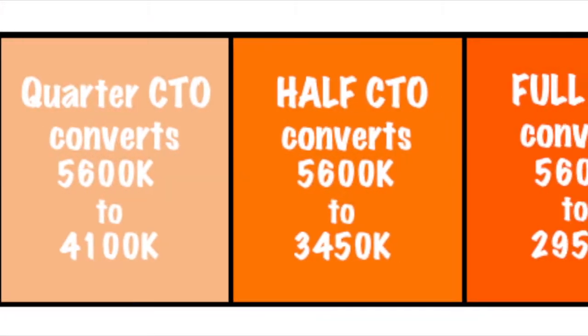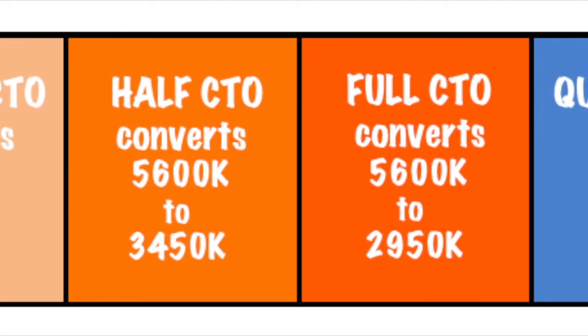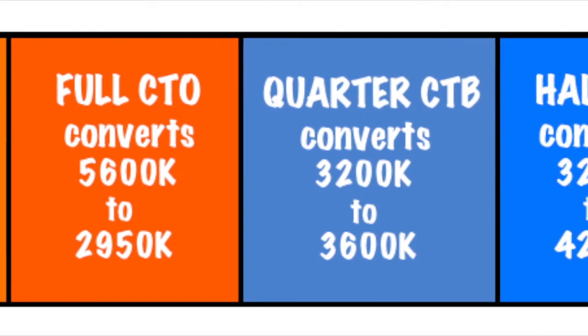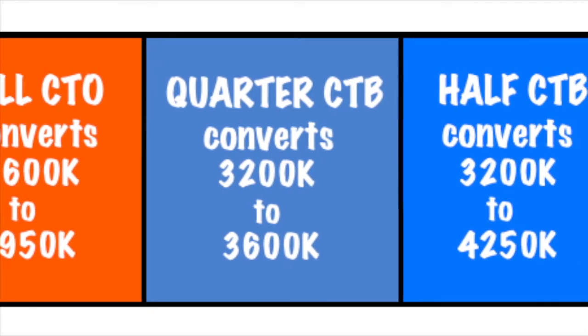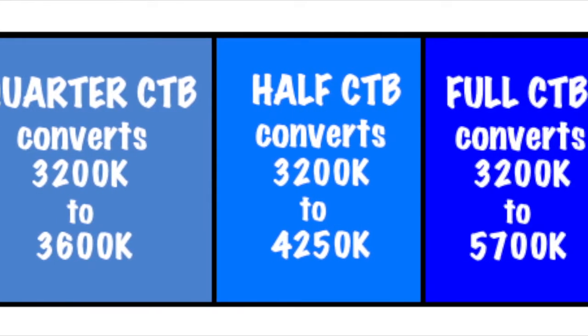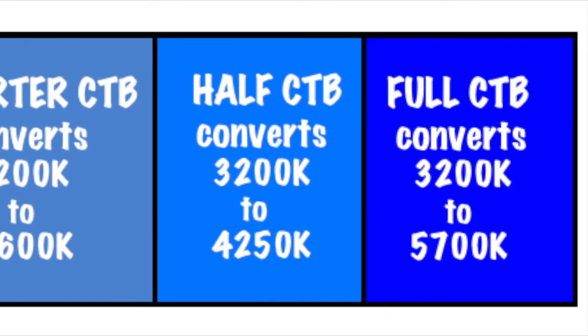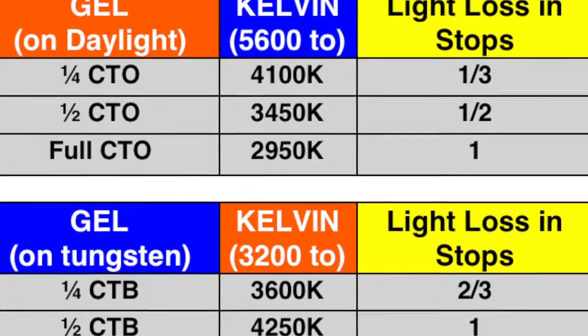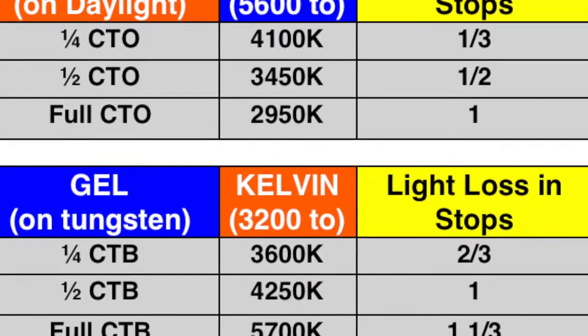You can also use color correction gel on daylight windows or fixtures in varying degrees. It is common to use color temperature orange, or CTO for short, to make daylight warmer. Color temperature blue, or CTB for short, to make tungsten light cooler. This will give the daylight or tungsten fixture a correct or desired color temperature, but makes them less bright.